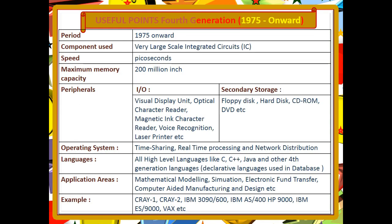Let's recall the key points of the fourth generation computers. The period is 1975 and onwards, and we are still using fourth generation computers. The components used are Very Large Scale Integrated circuits (VLSI). Speed is measured in picoseconds. The peripheral I/O devices and storage are those we use today. High-level languages are used. Examples include Cray1, Cray2, IBM 3090-600, IBM EAS-400, HB9000, IBM EAS-9000, and VAX.